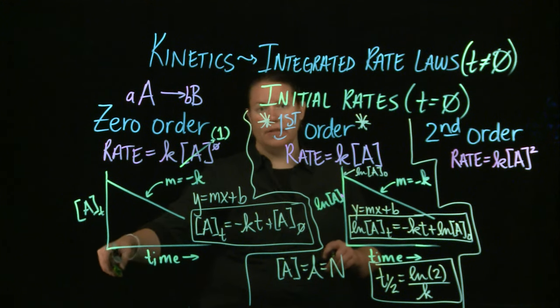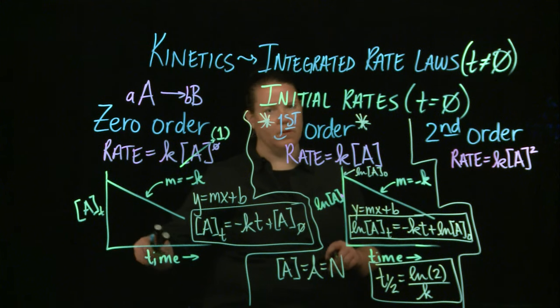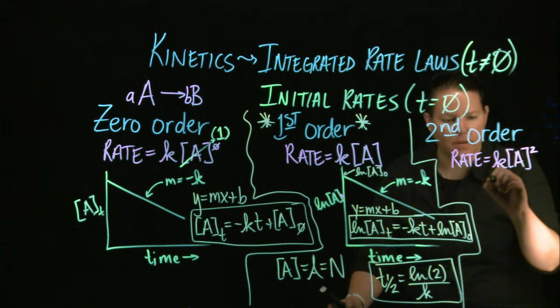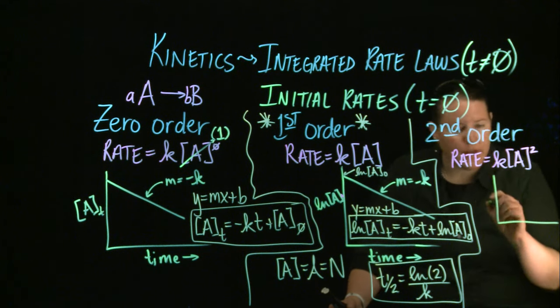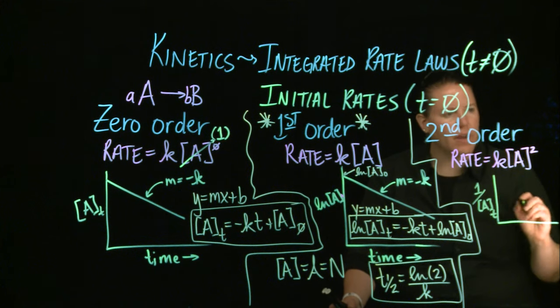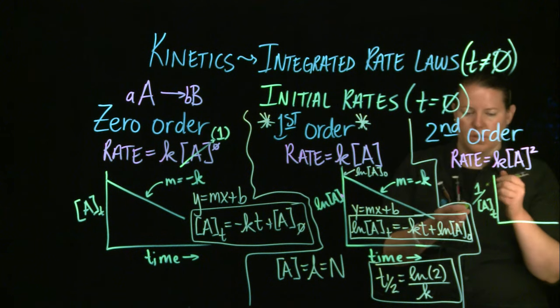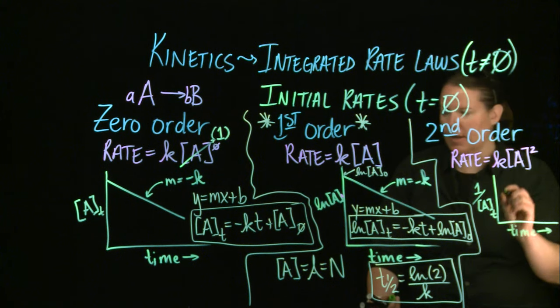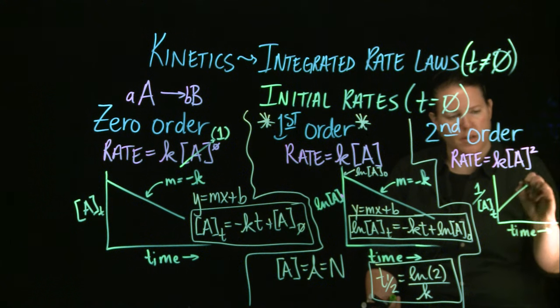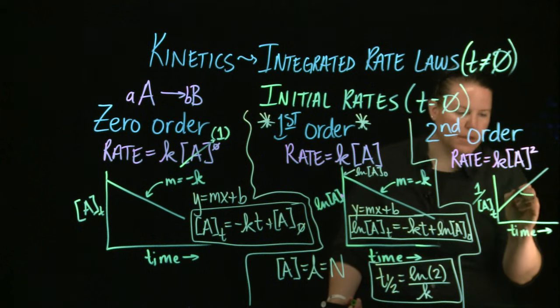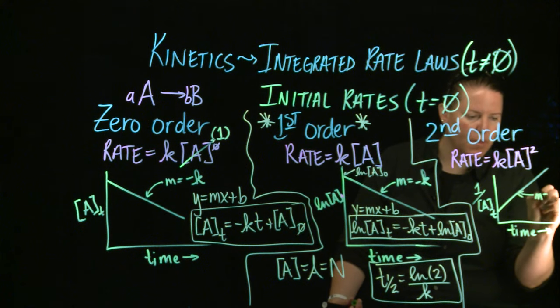So what we need to do is we need to plot it here. And this is going to be a little small, I'm sorry. 1 over A, the concentration of A over time versus time. And here what we got is we got a nice straight line that's increasing. So now, actually I'll put that in, M is positive K, not negative K. Can you guys see that? It's a little bit dicey. I'll put it over here, M equals plus K.